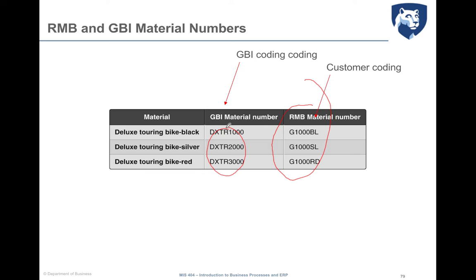By creating the customer material information record, I enable the customer to place its order based on its internal material numbers, which the JBI system is then able to translate into JBI material coding. This enables relationship flexibility because the customer can use its own coding, which is automatically translated into the supplier coding — all stored in the system without any manual intervention.